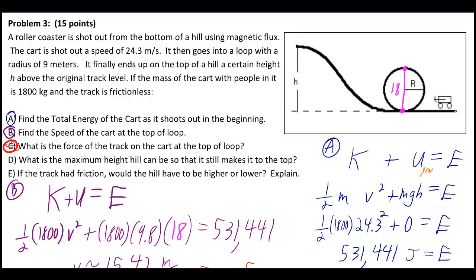And then we just plug in. Well, the height in this case is zero, so gravitational potential energy goes away. And if you plug in, you get one half times 1800 times 24.3 squared gives you this funky amount of joules.